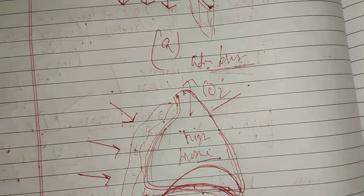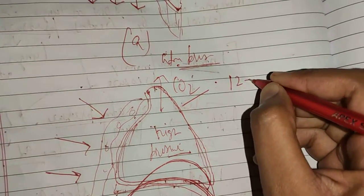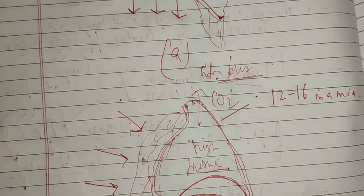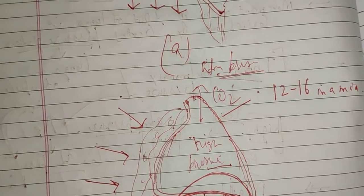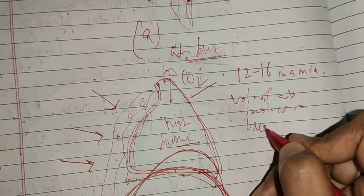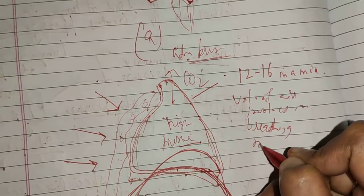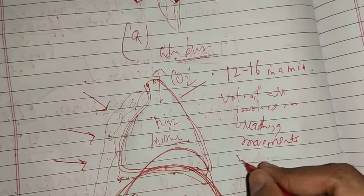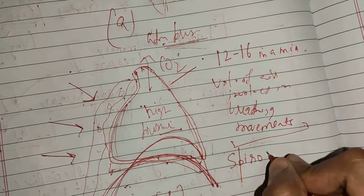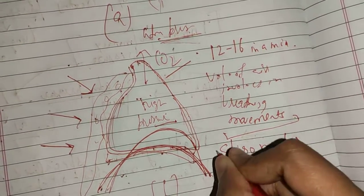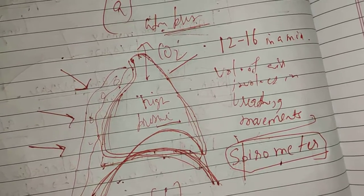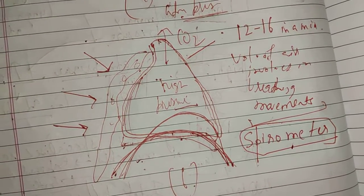On average, a healthy person breathes 12 to 16 times in a minute. The volume of air involved in breathing movements is estimated and measured with the help of a spirometer, which clinically doctors use to check pulmonary functions and lung functions. That's all for today, thank you.